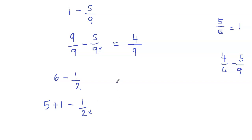So here, we're going to write 5 as it is, plus I'll write 1 whole as 2 over 2. Then we have take away 1 half.